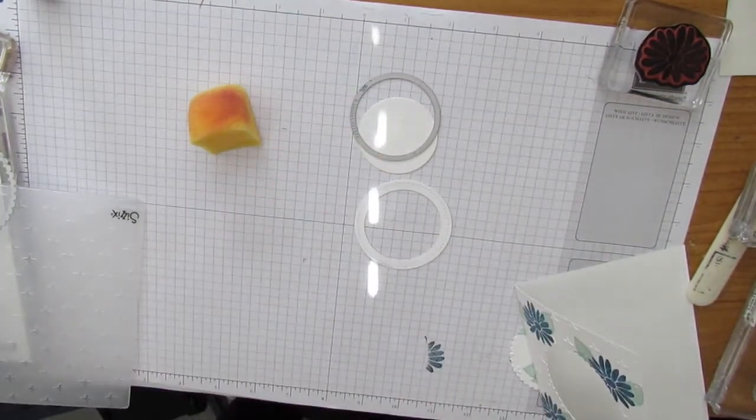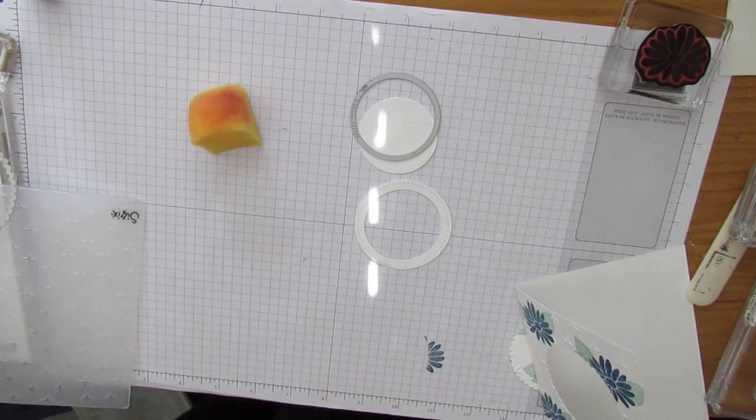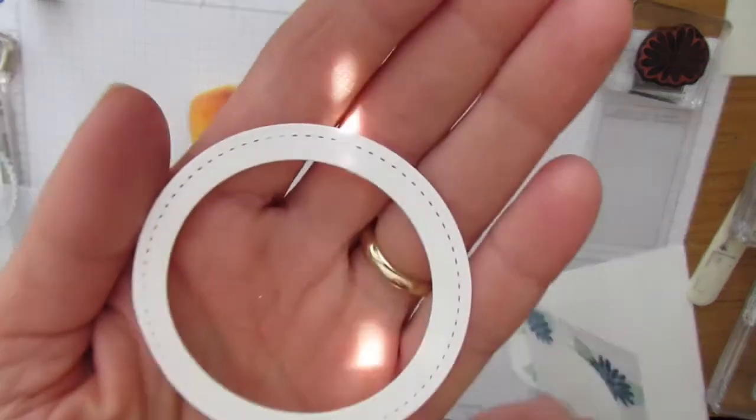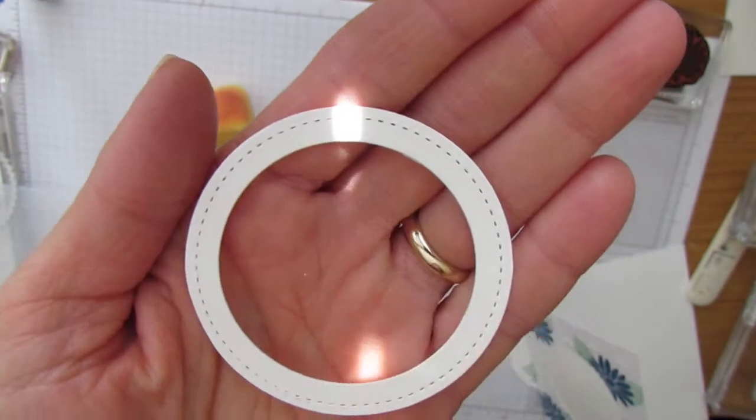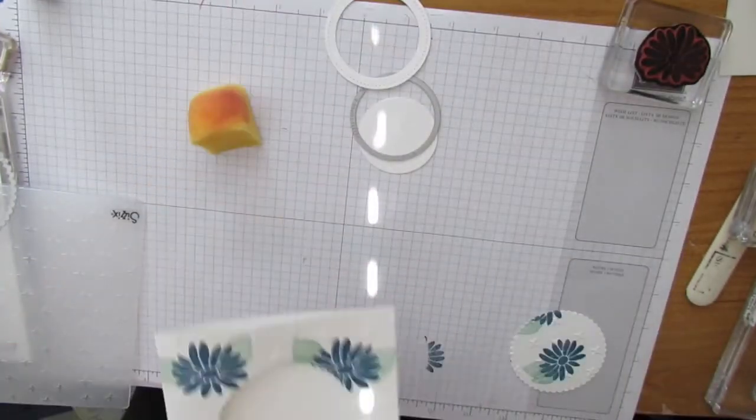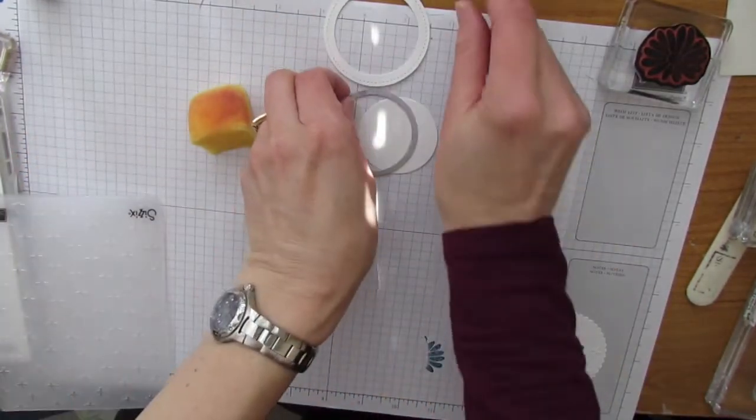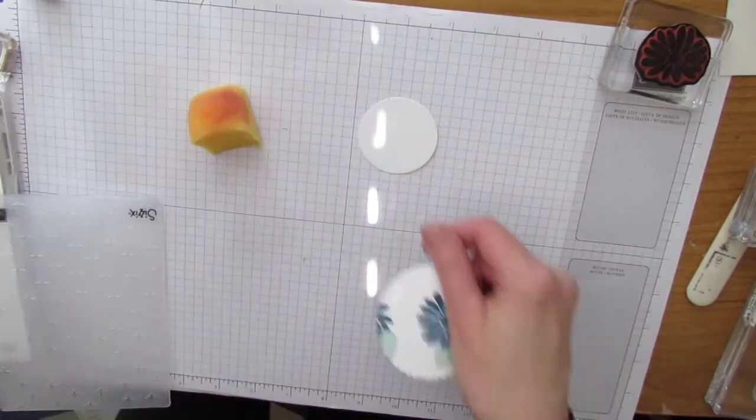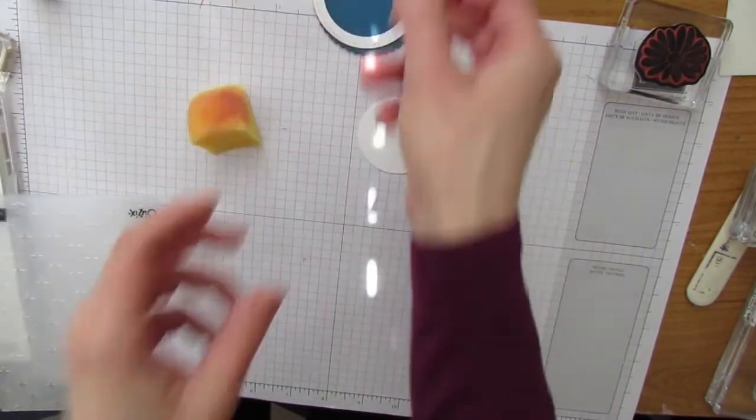So this is how it turns out. You can see it created a really cute frame and it has stitches on it as well. So I will set my dies aside so I don't lose them. Set these pieces aside.